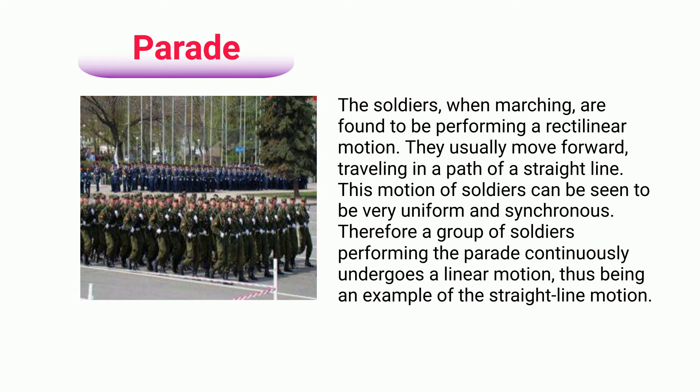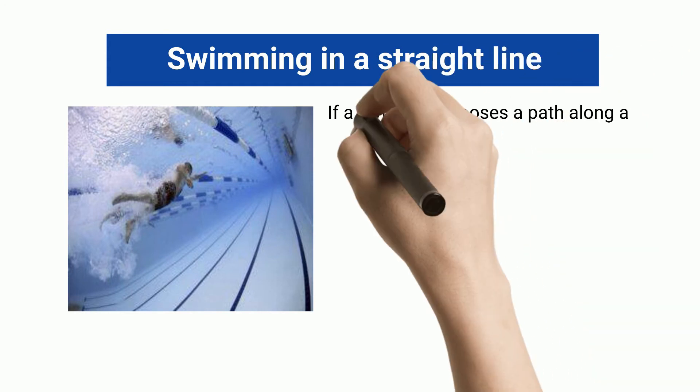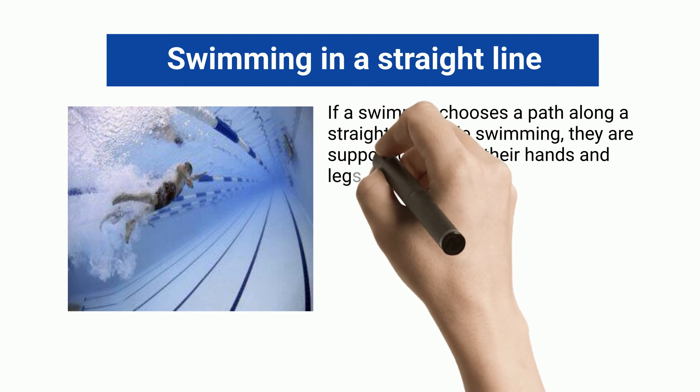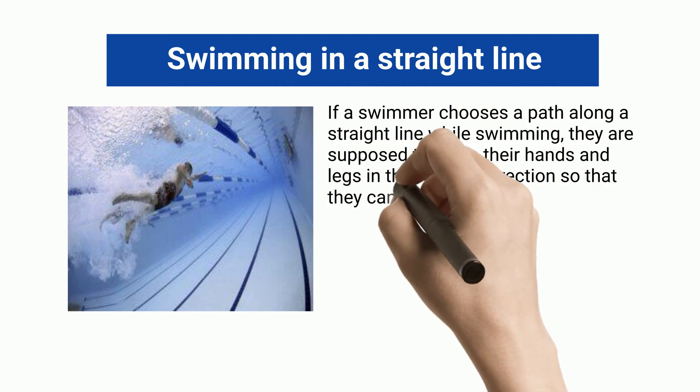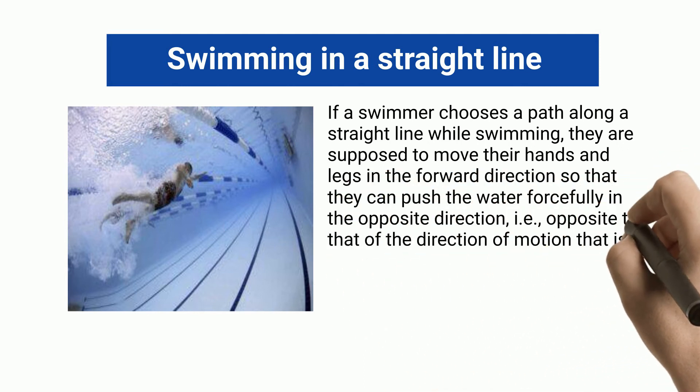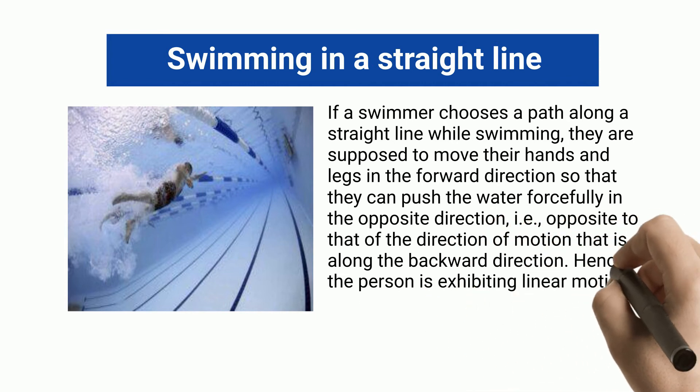Swimming in a straight line: if a swimmer chooses a path along a straight line while swimming, they are supposed to move their hands and legs in the forward direction so that they can push the water forcefully in the opposite direction, that is along the backward direction. Hence, the person is exhibiting linear motion along the forward direction.